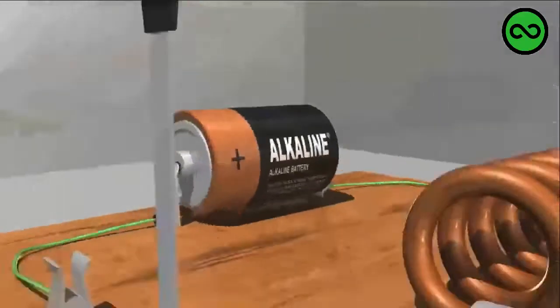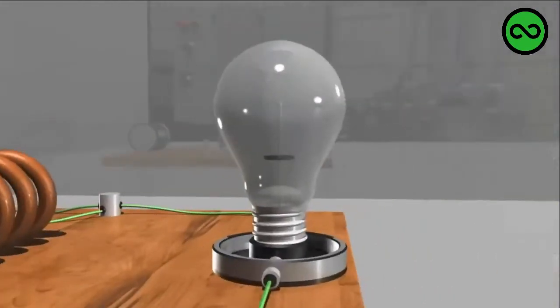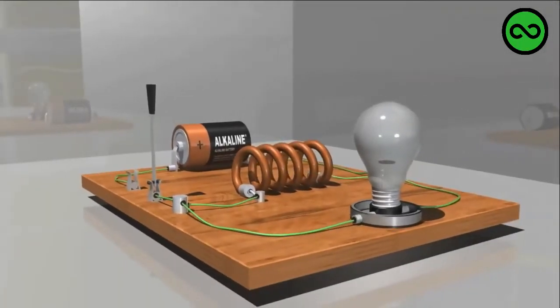Here is a simple circuit featuring a battery, a knife switch, and a light bulb. This circuit also contains a wire coil that serves as an inductor.